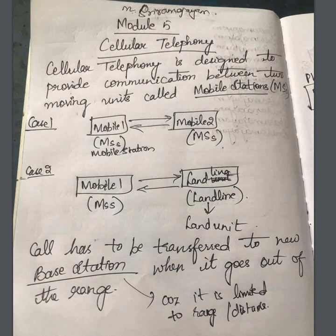Today we are going to discuss data communication module 5, which has three topics: wired, wireless, and cellular telephony. If you cover at least two topics in that module, we can fetch good marks. I chose cellular telephony, which is very interesting, and we can get to know about how our mobiles work.